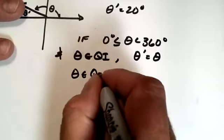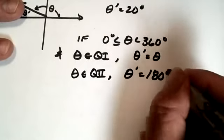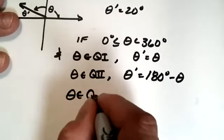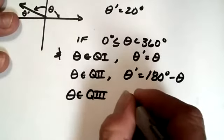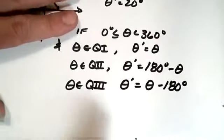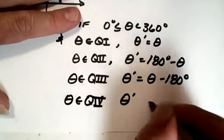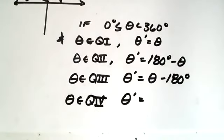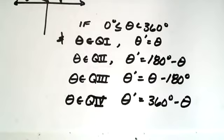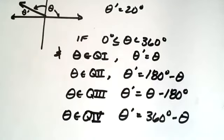If theta is in quadrant two, then you find theta prime by subtracting theta from 180 degrees. If you're in quadrant three, then you kind of reverse it there. The reference angle is found by subtracting 180 degrees from theta. And then finally, if theta is in quadrant four, then theta prime is found by, it's you subtract the angle from 360 degrees. So here's kind of the system for doing this, but this is not a super complicated idea.